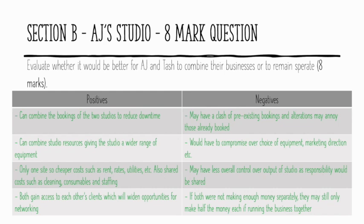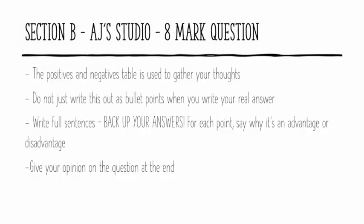Now we've got all our points broken down, we can't just put these as bullet points — we'd only get half the marks. We need to make these into full sentences and back up each point. When you say something is an advantage, you've got to say why it's an advantage. You could go through all your advantages then all your negatives, or alternate positive-negative throughout. At the end, you need a conclusion that brings everything together, and in that conclusion you give your opinion on whether AJ and Tash should combine their businesses. Pause the video and give yourself about 15 minutes to write this out fully.